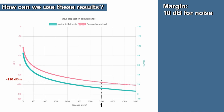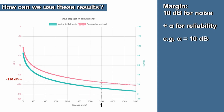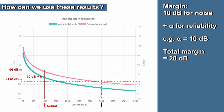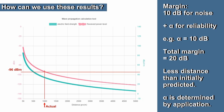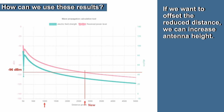When inserting our margin, we allow 10 dB to cover any signal variation due to noise, plus alpha for reliable data communication. For example, if alpha is 10 dB then we will need to insert a total margin of 20 dB in our simulation. The margin means operating at a slightly less distance than initially predicted, and alpha will be whatever the customer decides is necessary for reliable communication. If necessary, increasing the height of the antennas will increase the levels and move the lines up, giving us greater range.